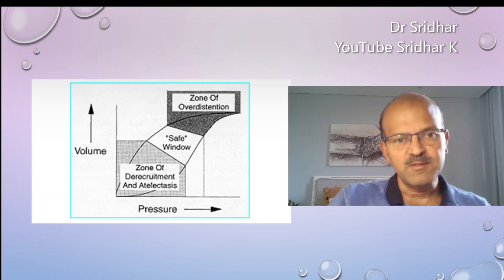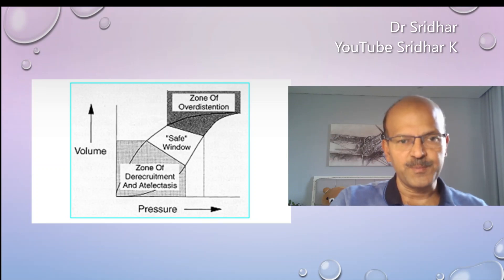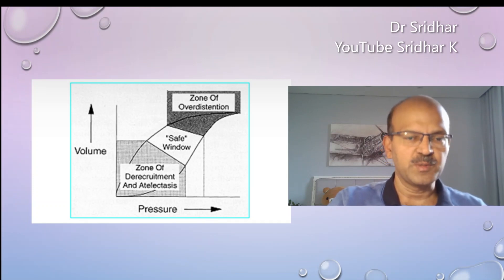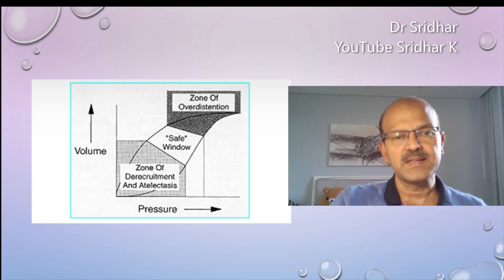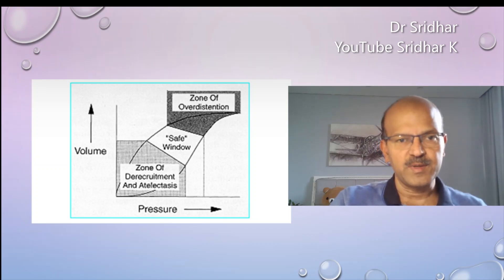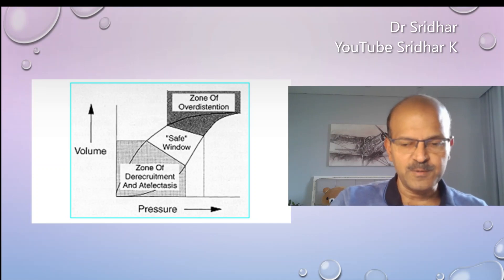Irrespective of whether we use non-invasive or invasive ventilation, the aim is to stay in the safe window. On this pressure-volume curve — volume on the y-axis and pressure on the x-axis — as the lung gets stiffer, the curve becomes flatter and you need more pressure to achieve a given volume, meaning lung compliance is low. Initially, pressure opens up the collapsed lungs from the zone of de-recruitment and atelectasis. Increasing pressure beyond a certain level reaches the zone of over-distension, where further pressure increase does not change volume — you are wasting pressure and causing barotrauma. The principle of hysteresis means you can reduce pressure back into the safe window without losing volume.